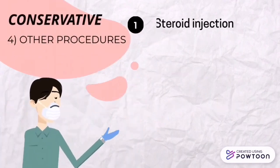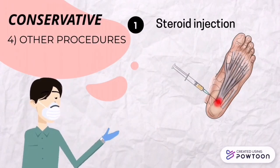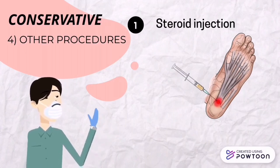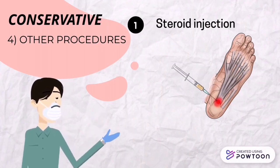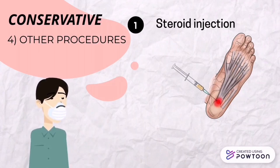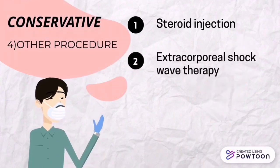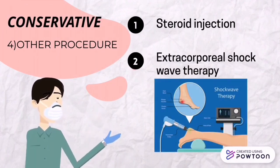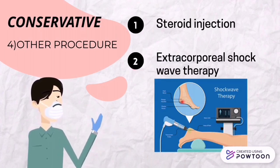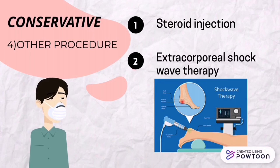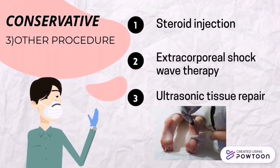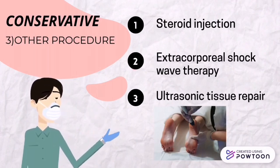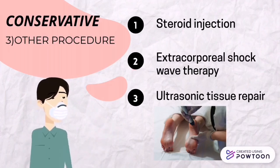Other procedures include steroid injections — injecting steroid medication into the tender area can provide temporary pain relief, though multiple shots are not recommended as they can weaken the plantar fascia and possibly cause a rupture. Using ultrasound imaging, platelet-rich plasma drawn from the patient's own blood can be injected to promote tissue healing. Extracorporeal shock wave therapy directs sound waves at the area of heel pain to stimulate healing and is usually used for chronic plantar fasciitis that has not responded to conservative treatments. Ultrasonic tissue repair uses ultrasound imaging to guide a needle-like probe into the damaged tissue, where rapid vibration breaks up and suctions out the damaged material.